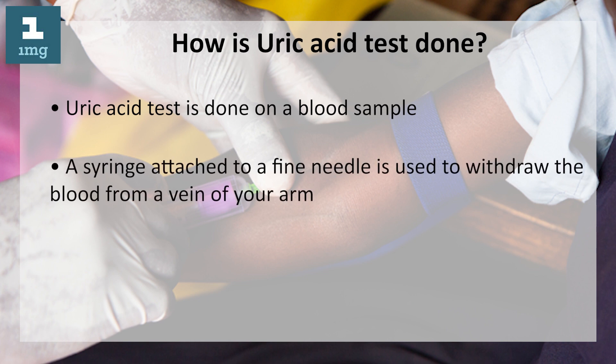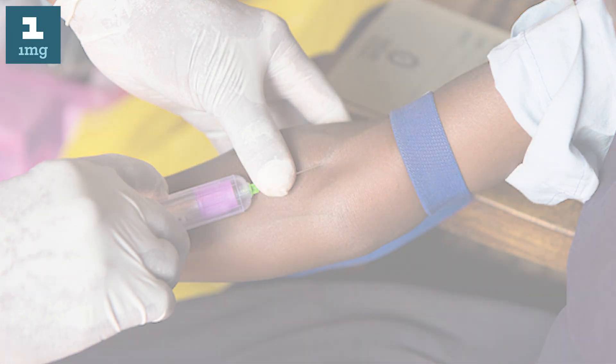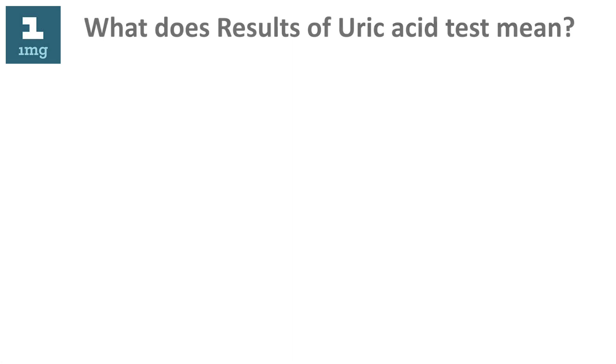How is a uric acid test done? The uric acid test is done on a blood sample. A syringe attached to a fine needle is used to withdraw blood from a vein of your arm.